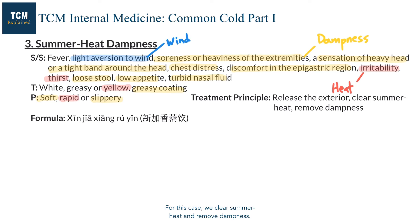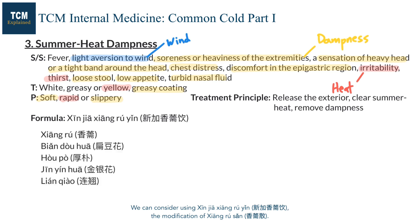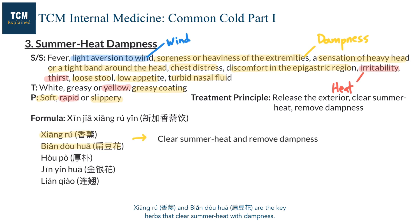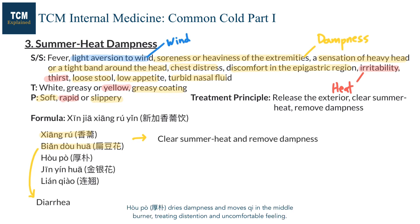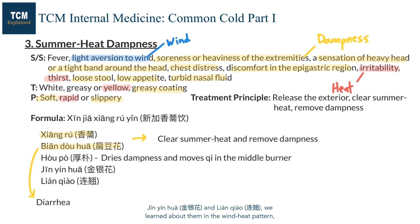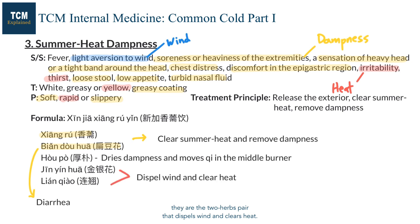For this case, we clear summer heat and remove dampness. We can consider Xin Jia Xiang Ru Yin, a modification of Xiang Ru San. Xiang Ru and Bian Dou Hua are the key herbs that clear summer heat with dampness; Bian Dou Hua is especially effective for diarrhea. Hou Po dries dampness and moves Qi in the middle burner, treating distention and discomfort. Jin Yin Hua and Lian Qiao, the pair we learned about in the wind heat pattern, dispel wind and clear heat.